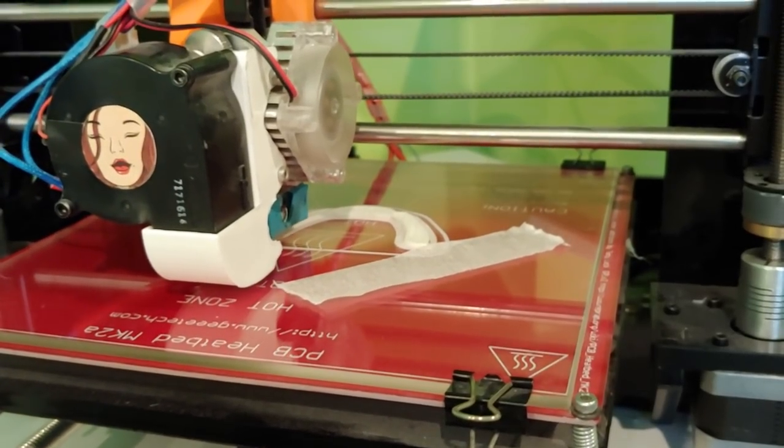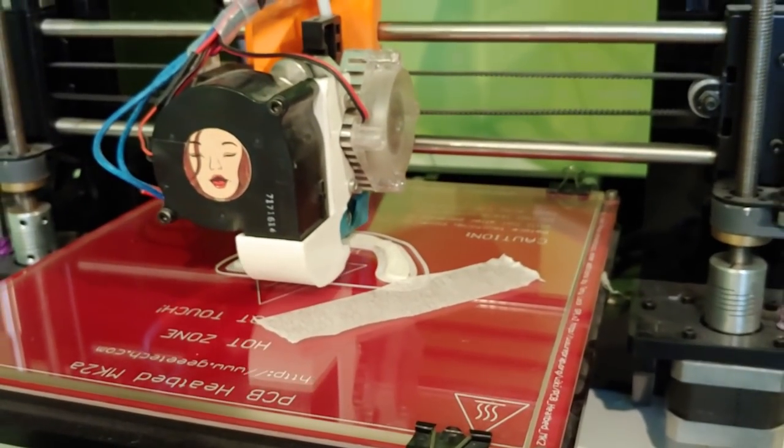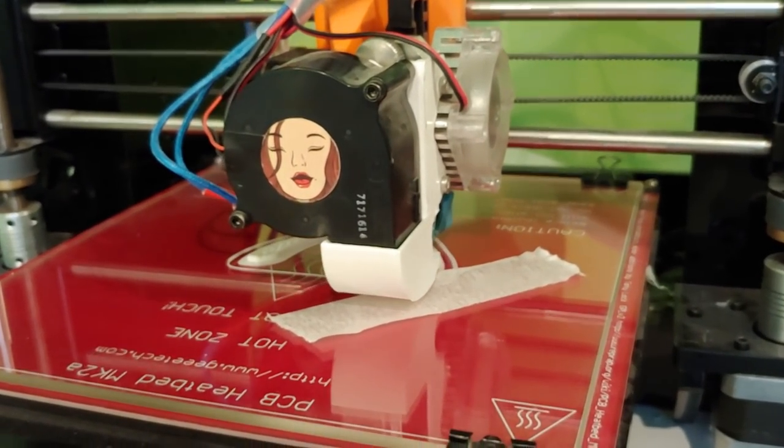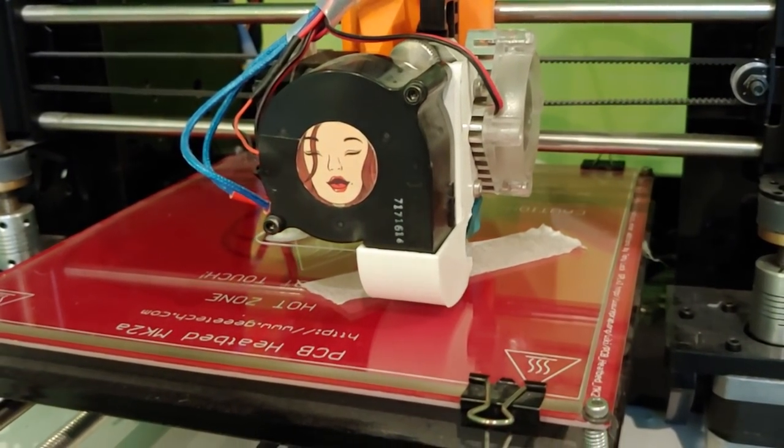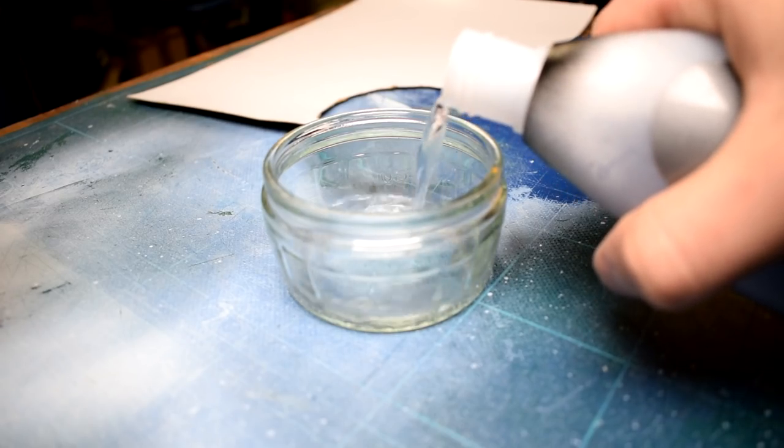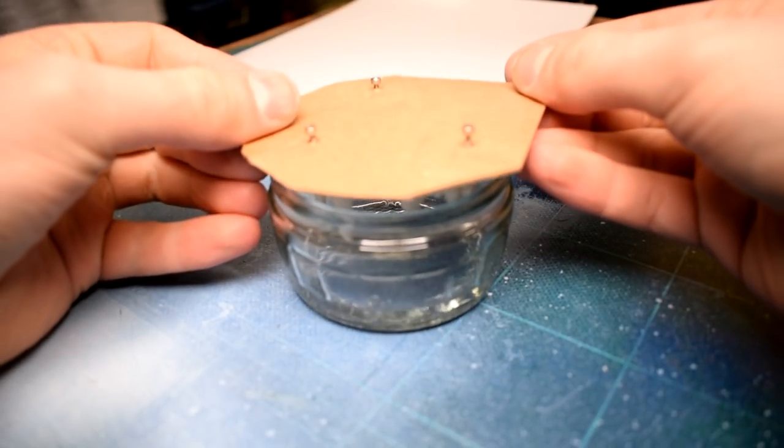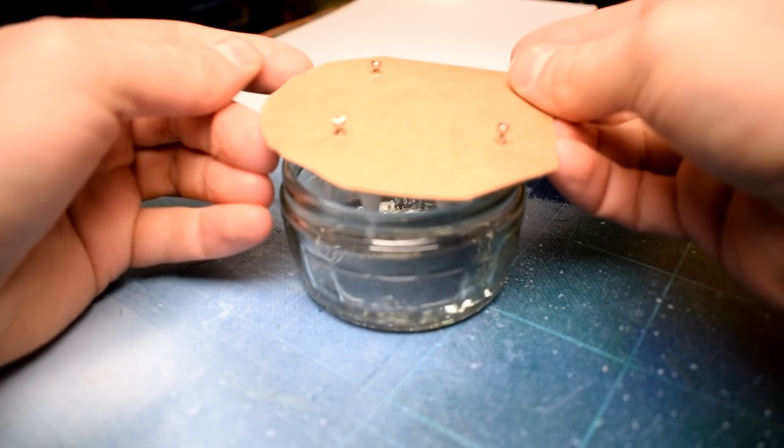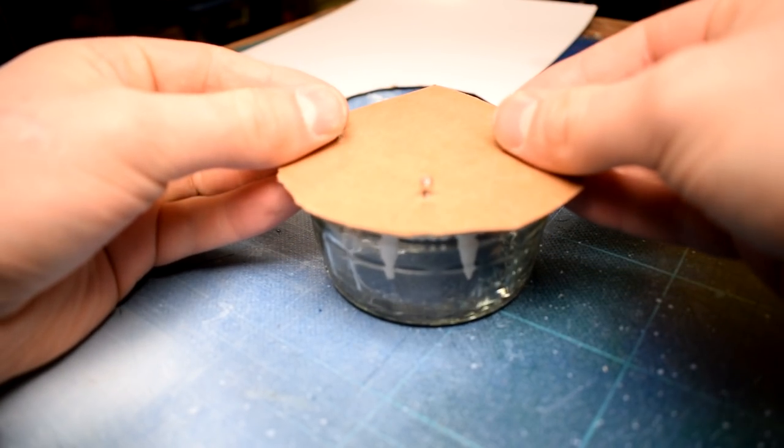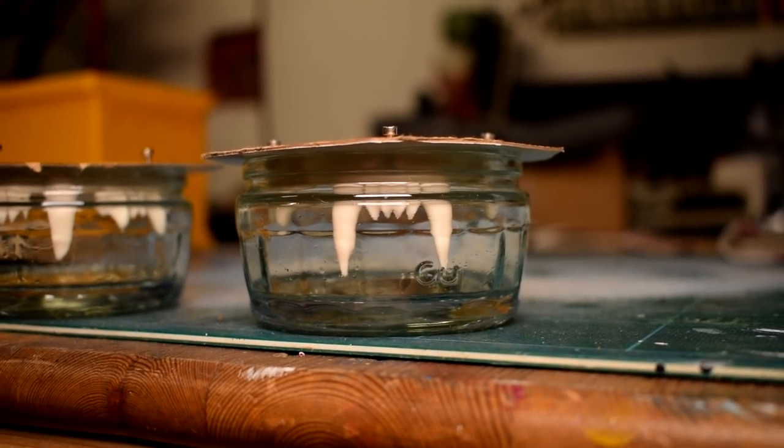So first of all I tried printing these in a natural white ABS, which has a really nice translucency to it, and it's also a little bit off-white so it does seem like a little bit more natural toothy color. And then I used acetone smoothing to get the teeth nice and shiny. I didn't do anything special for the acetone smoothing. It would have been better if it had some kind of circulation, but all I did was put them in a jar above a little bit of nail polish remover.